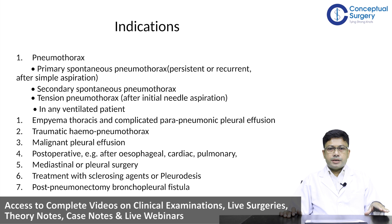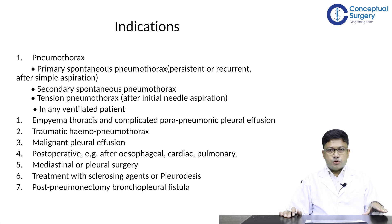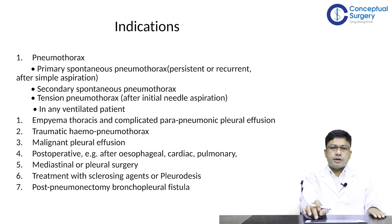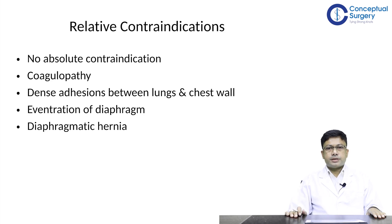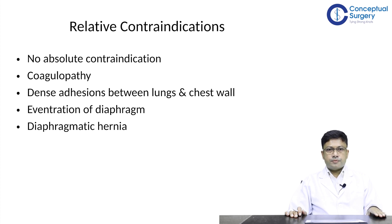In cases of post-pneumonectomy bronchopleural fistula, chest tube insertion can be done by a competent thoracic surgeon. There are no absolute contraindications for chest tube insertion — if it needs to be done, it has to be done — but one should be careful about certain clinical conditions requiring special precautions before carrying out a tube thoracostomy.